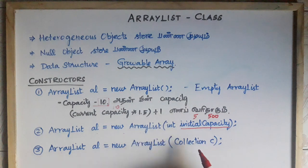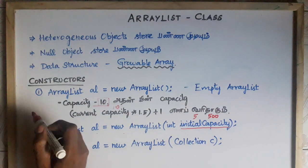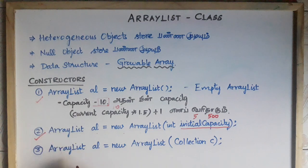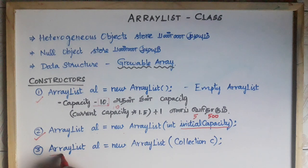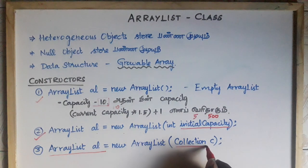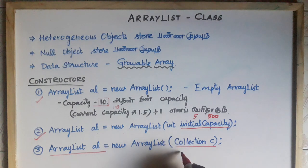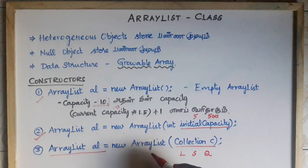There are three constructors for ArrayList. The first constructor creates an empty ArrayList. The second constructor takes an initial capacity. The third constructor is: ArrayList al = new ArrayList(Collection c) — if you have any class that implements the Collection interface, such as a List, Set, or Queue, you can add it into the ArrayList using this constructor.